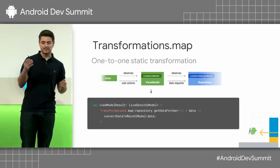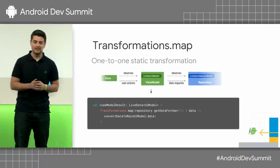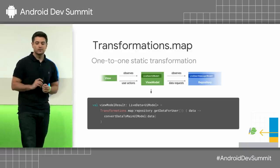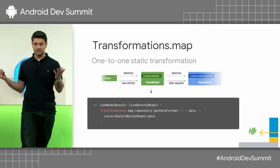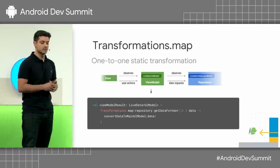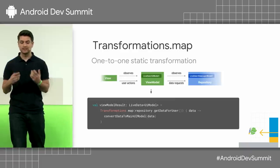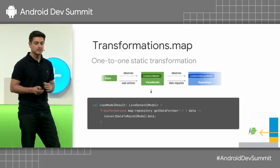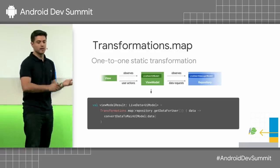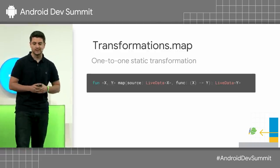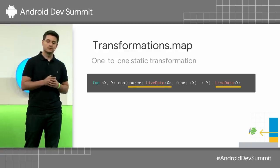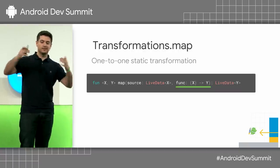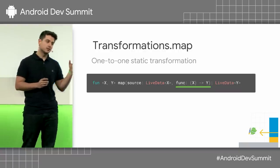So how do we make the first sample — a bridge between the view and the repository? We use a transformations map, which I call a one-to-one static transformation. In the ViewModel, we expose a LiveData — in this case it's called viewModelResult — and it's the result of a transformations map. The first parameter is the source LiveData exposed by the repository, and the second parameter is the transformation function. In this case, it's simply converting from the data layer model to the UI model. And this is how the signature looks in Kotlin: it has a source which is a LiveData of X, and it returns a LiveData of Y. So it's a bridge of LiveData with a transformation function in the middle that transforms from X to Y. It doesn't know anything about LiveData.